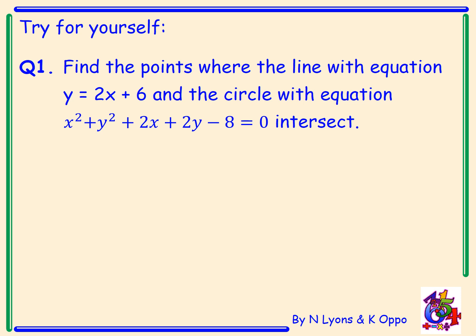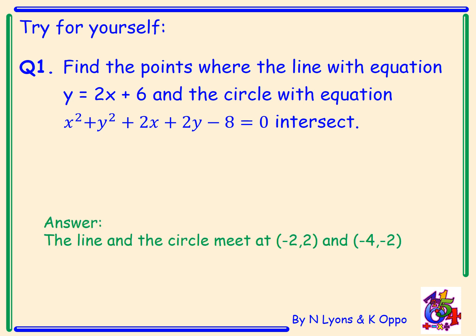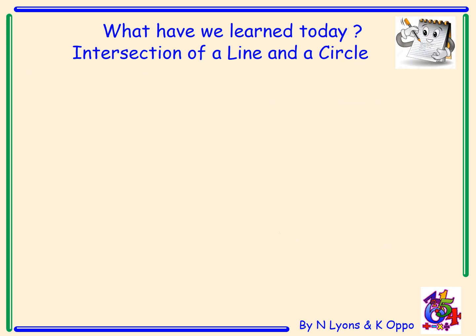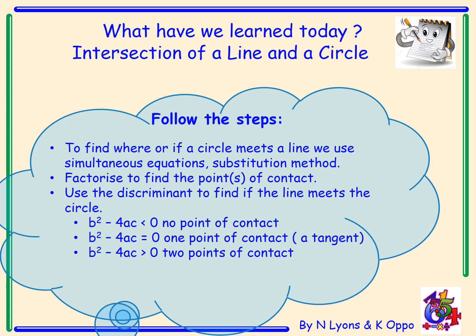Now try this question for yourself — please pause the video. The answer: the line and the circle meet at (negative 2, 2) and (negative 4, negative 2). Today we've learned how to find the intersection of a line and a circle using simultaneous equations — specifically the substitution method. We factorise to find the points of contact, or use the discriminant to determine how many times the line meets the circle: if b squared minus 4ac is less than 0 there is no contact; if equal to 0 the line is a tangent; if greater than 0 there are two points of contact.